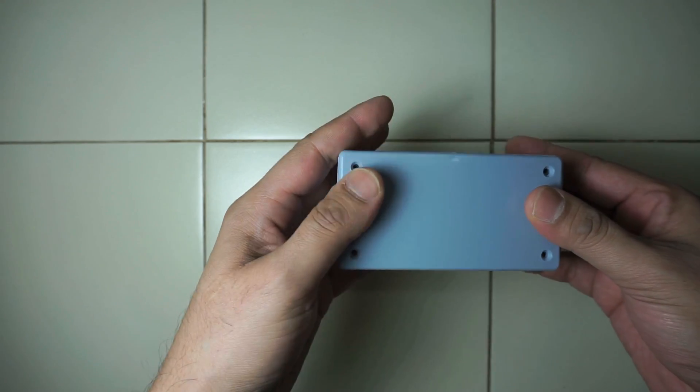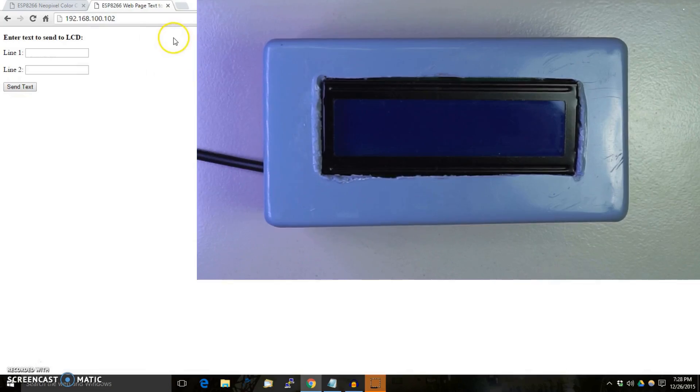So this is the IP address of the ESP8266, and the two lines over here correspond to the two lines of the LCD display, and both have a limitation of 16 characters.